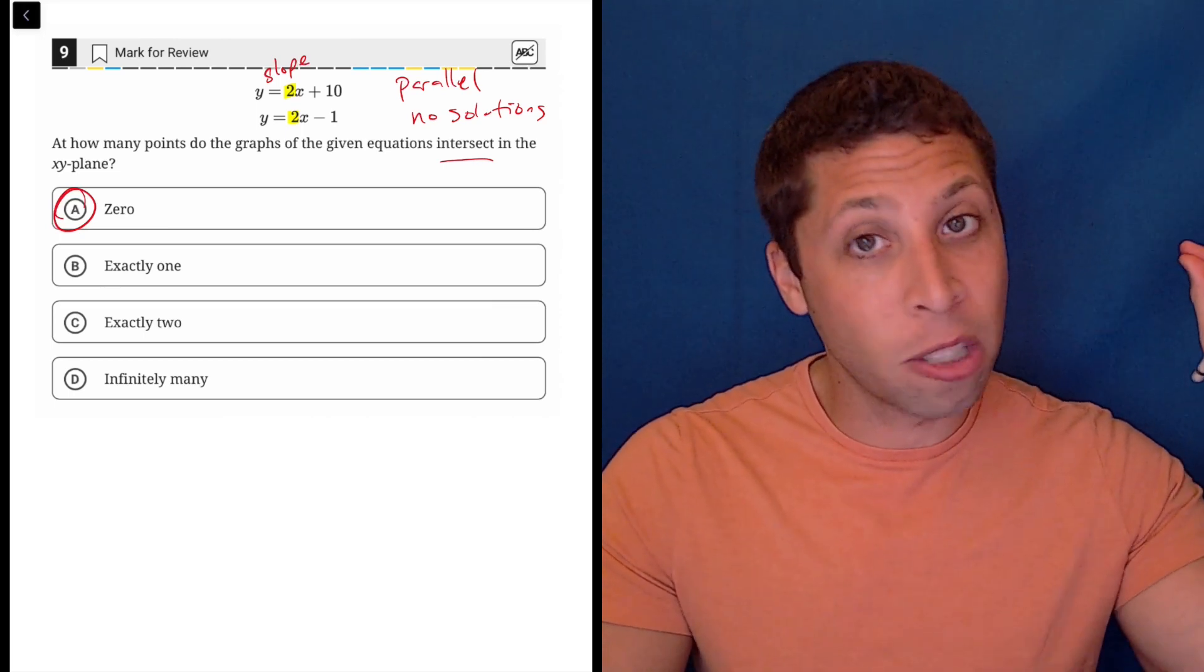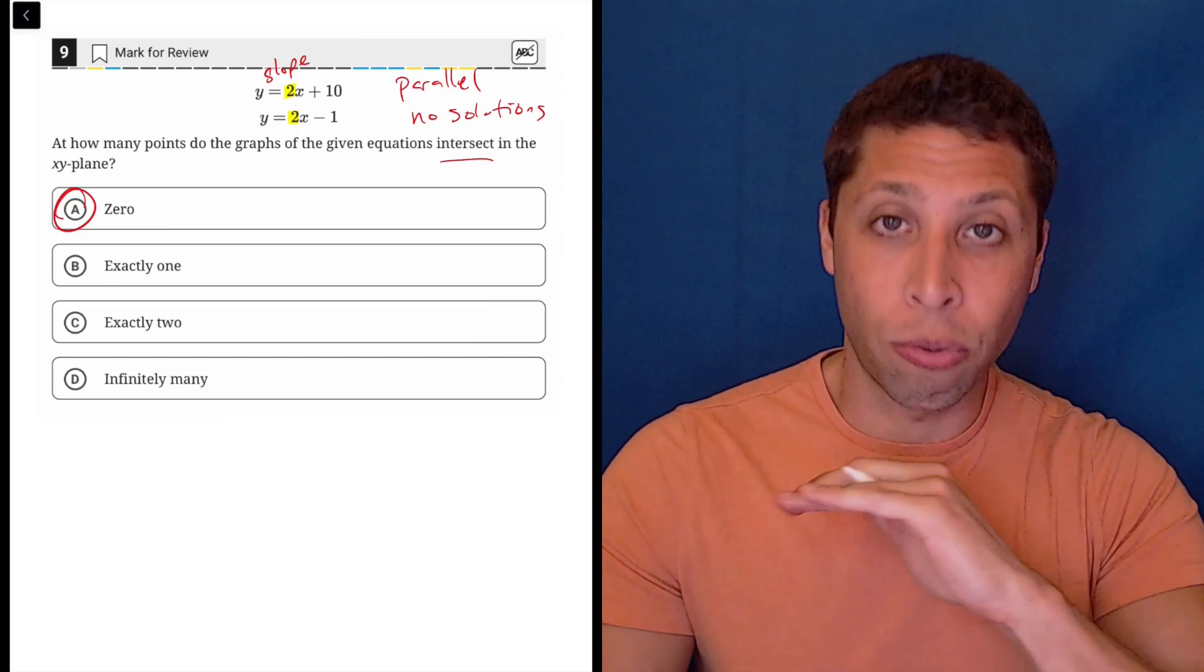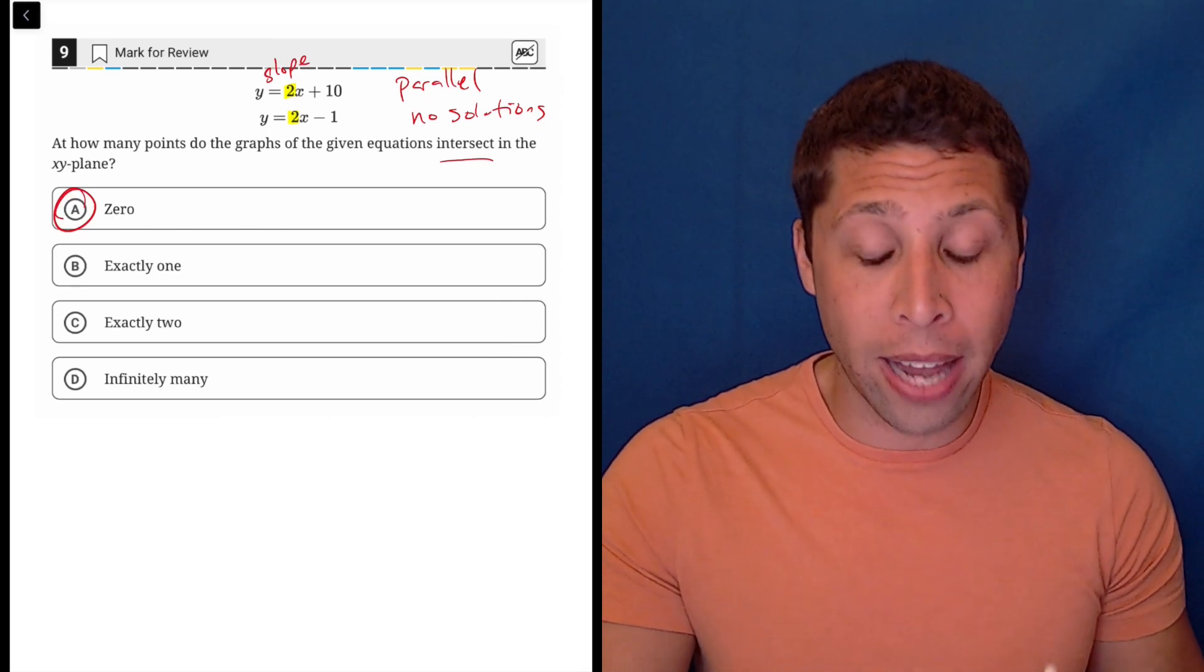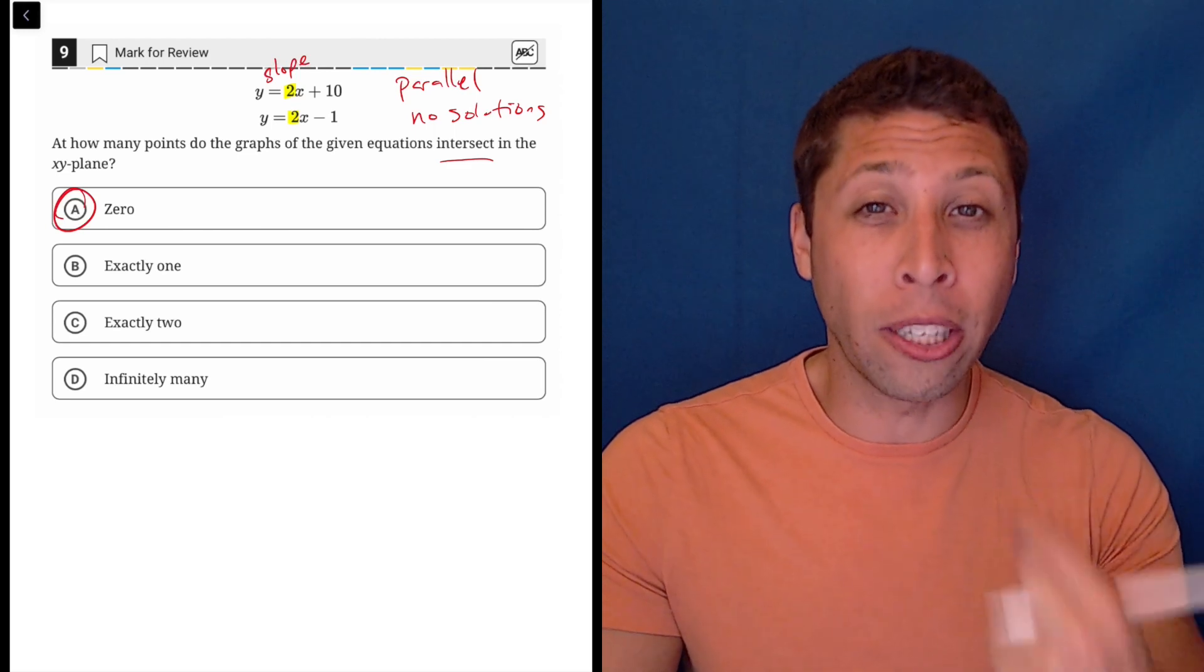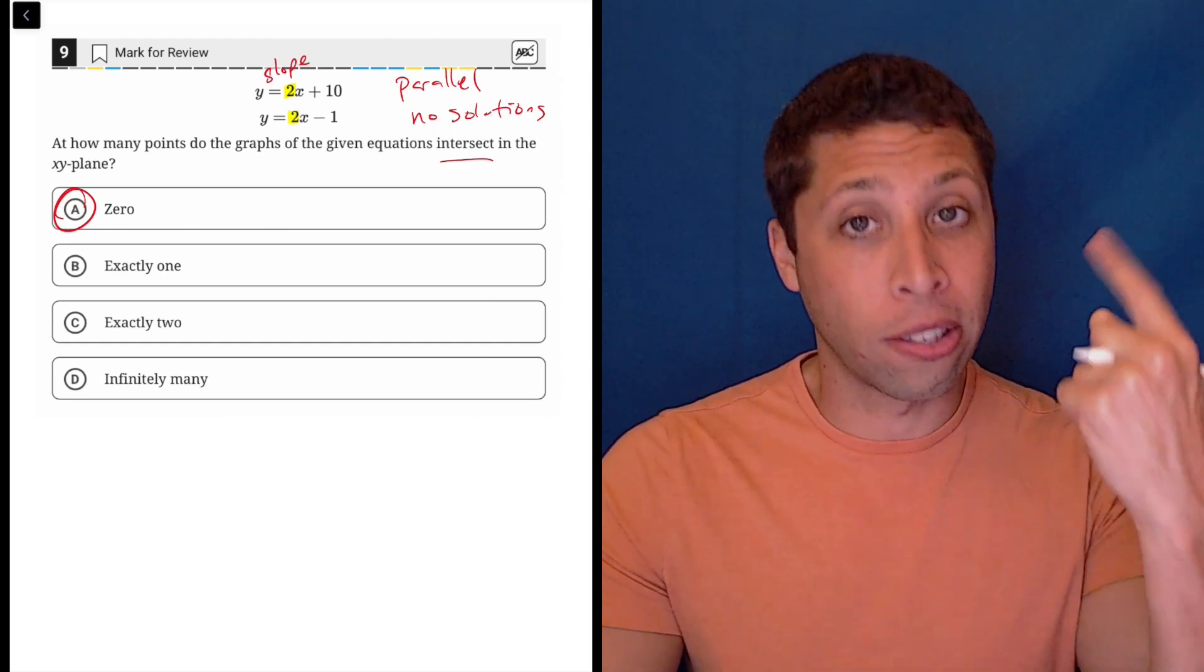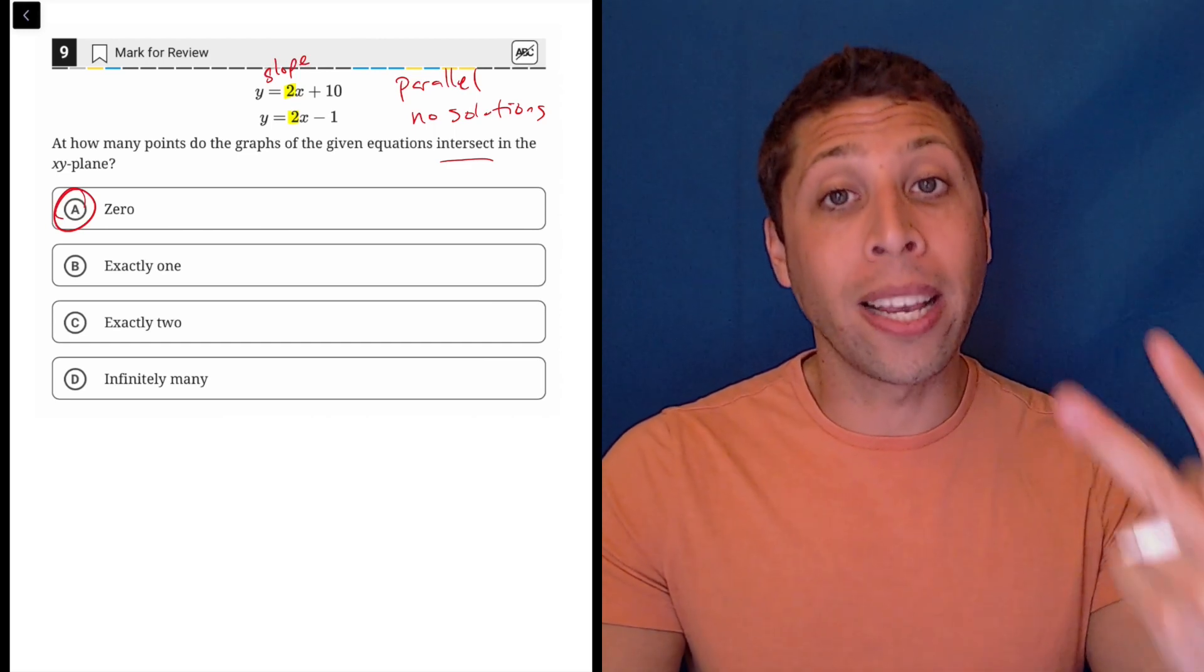This is something that I'd be able to get in a split second because these are just written in y equals mx plus b format. I know that when they're asking about lines and the number of solutions, I'm really just looking for two things. Are the slopes the same and are the y-intercepts the same?